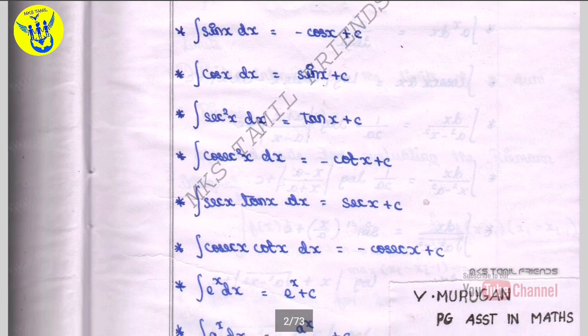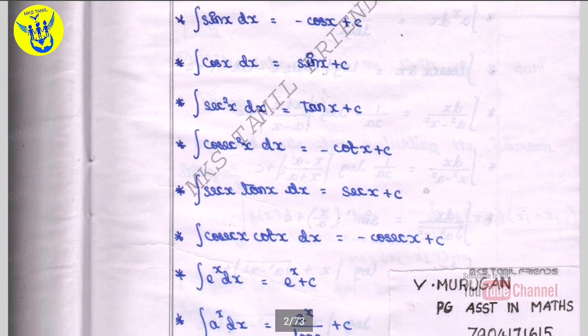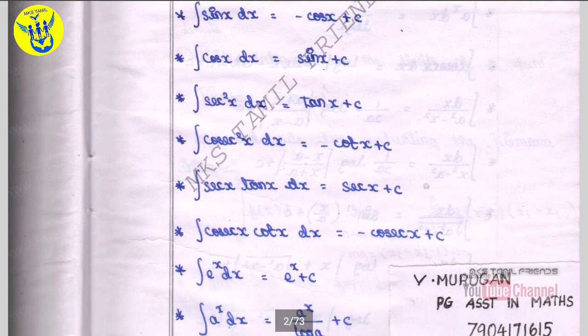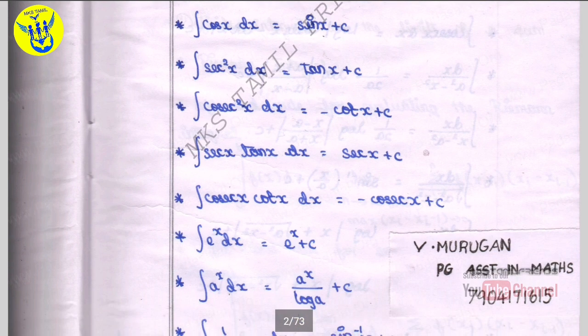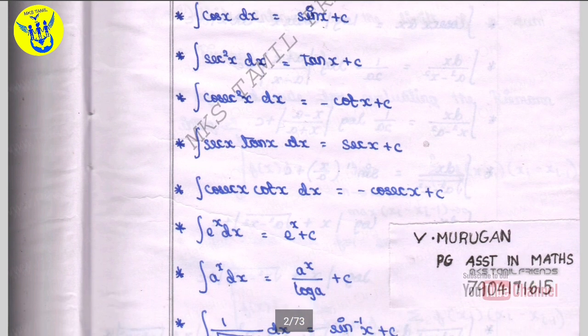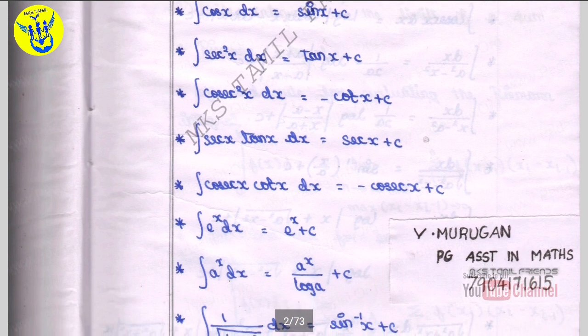Integral e power x dx is equal to e power x plus c. Integral a power x dx is equal to a power x by log a plus c.